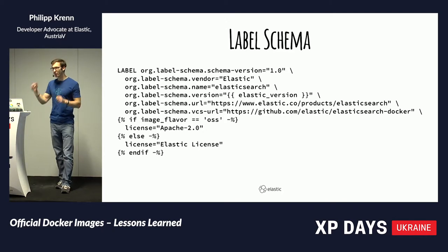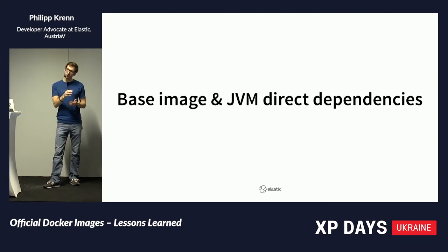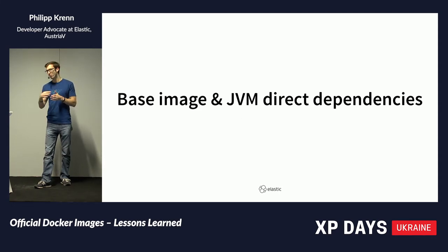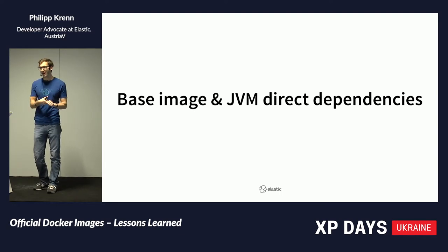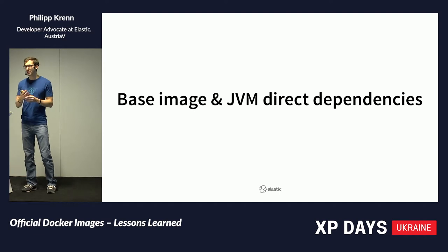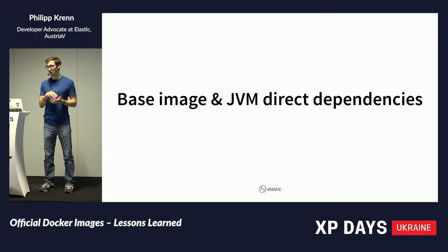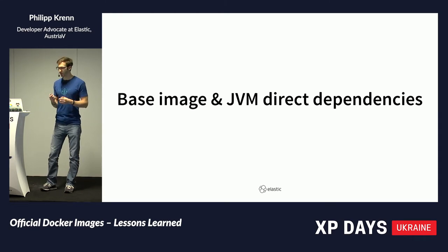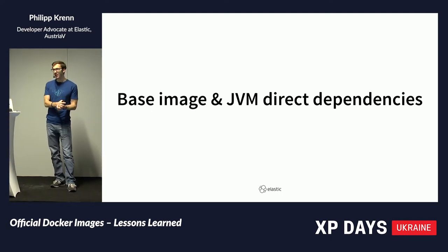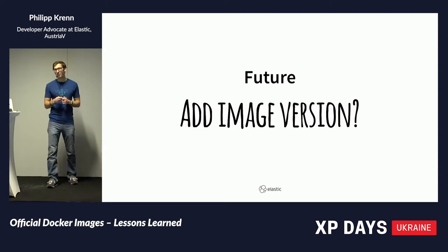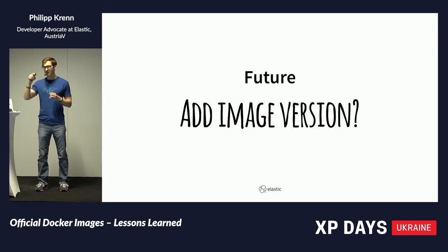We will also not provide security updates for older versions automatically, because with Docker images you suddenly have a full load of other dependencies — the base image and the JVM. We might need to update container 5.6, which is still supported, because there's a security issue in the base image. Right now we only release new images with security updates when there's a new Elasticsearch version. We might change this and version those in the future — perhaps adding a Docker image version like 6.5.2_1, 6.5.2_2, depending on which version of the Docker image we push out. We don't have that yet and are still unsure if we want it.